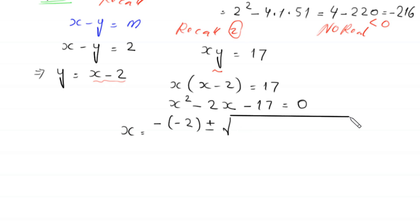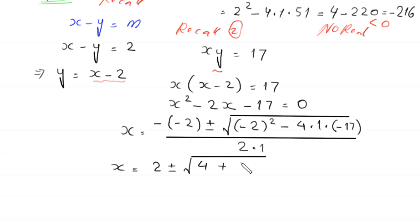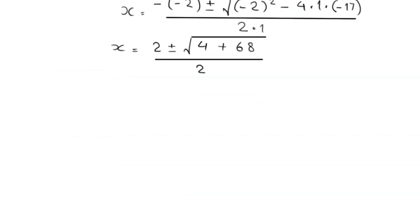Using the quadratic formula x = (−b ± √(b² − 4ac)) / 2a with a = 1, b = −2, c = −17: x = (2 ± √(4 + 68)) / 2 = (2 ± √72) / 2.